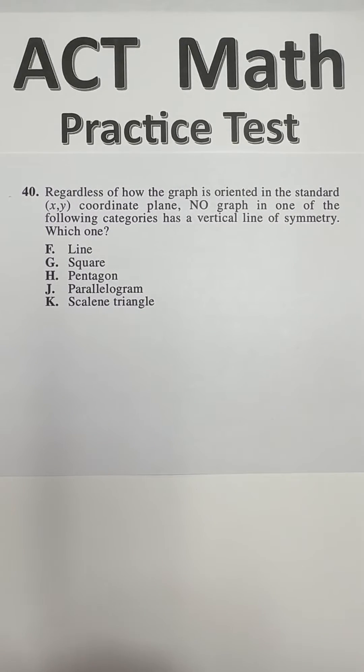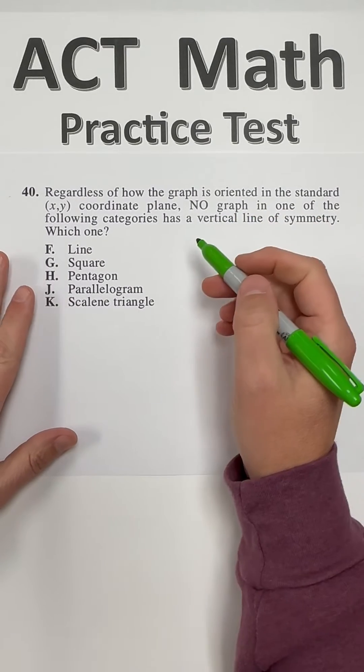So what I need to do is just see which one of these, there should be four of them, that have a vertical line of symmetry.